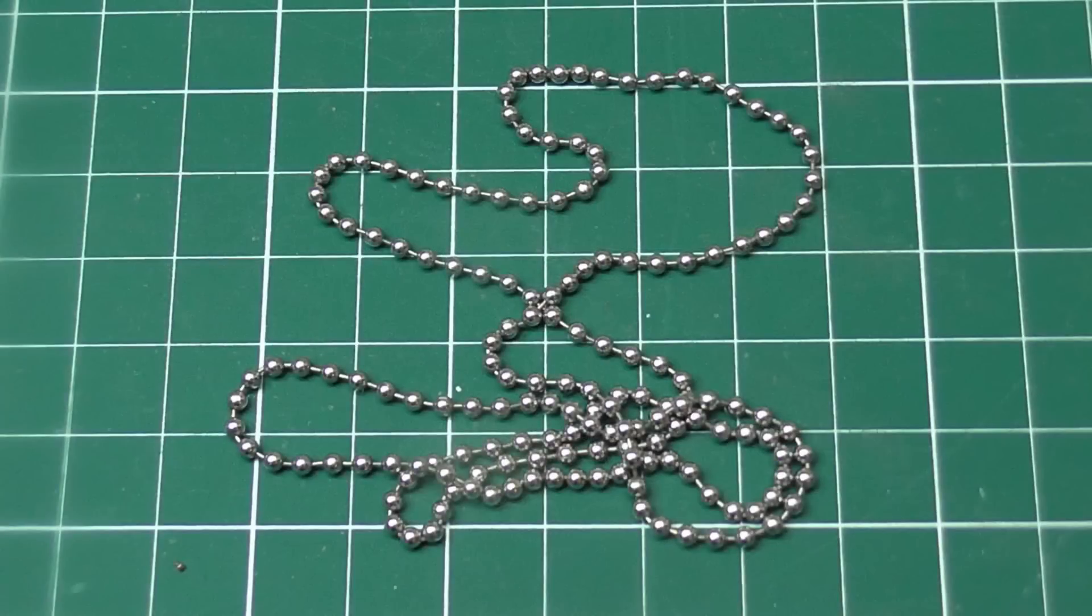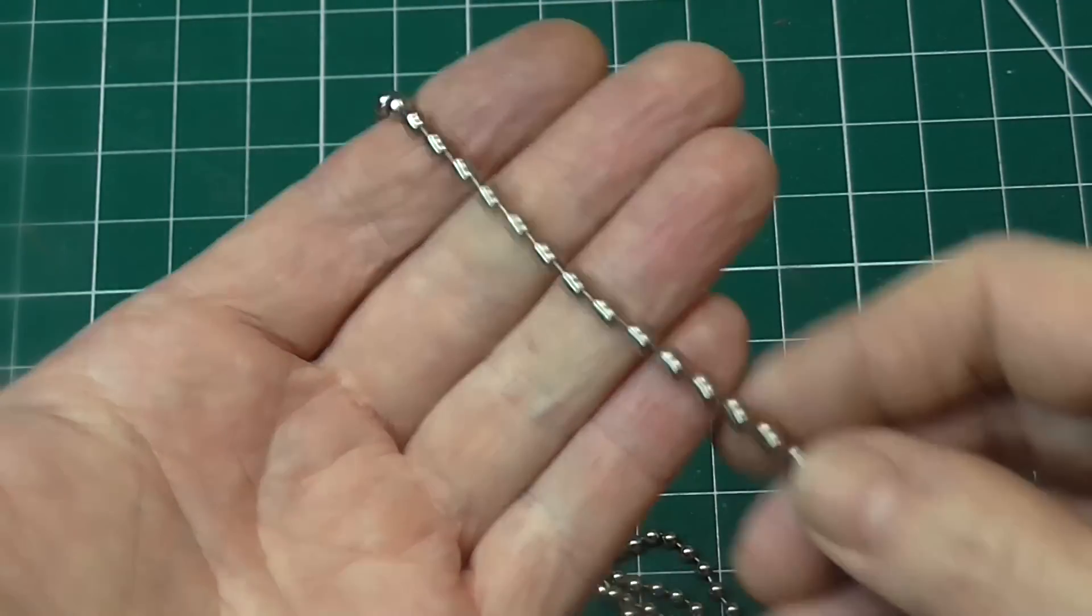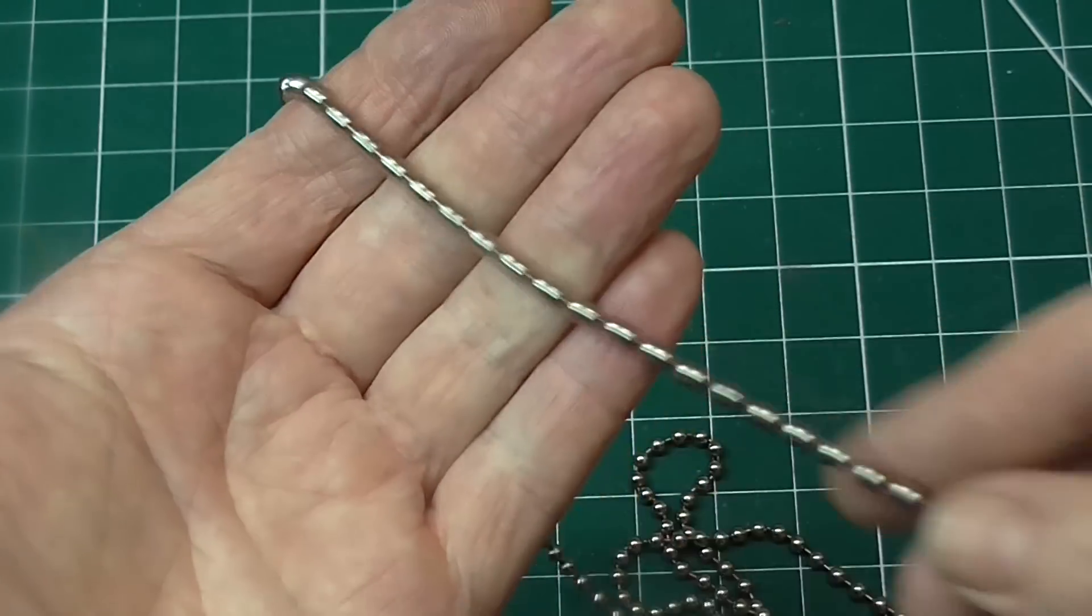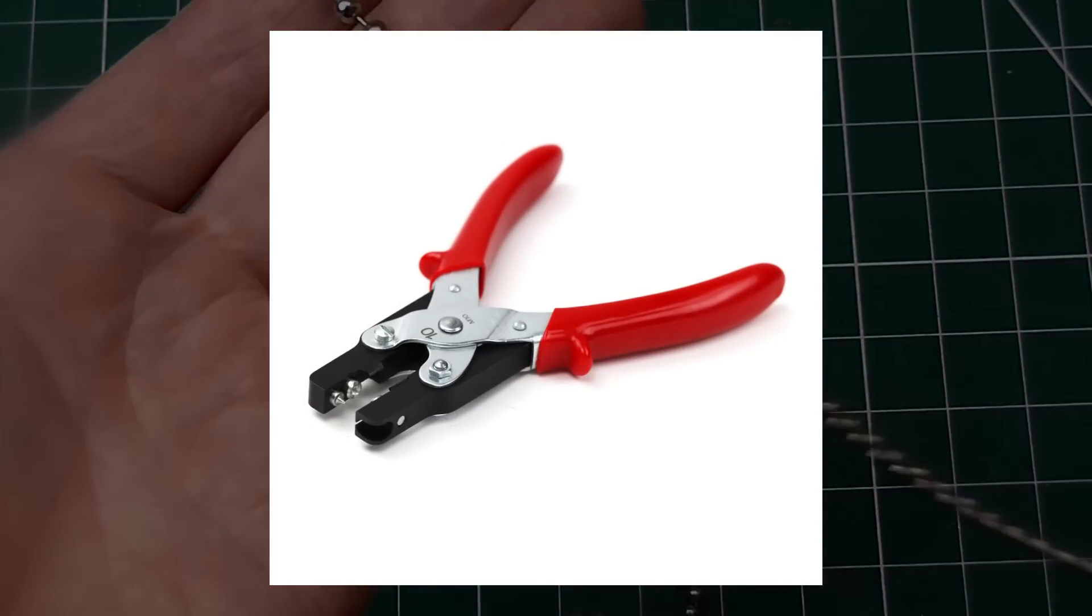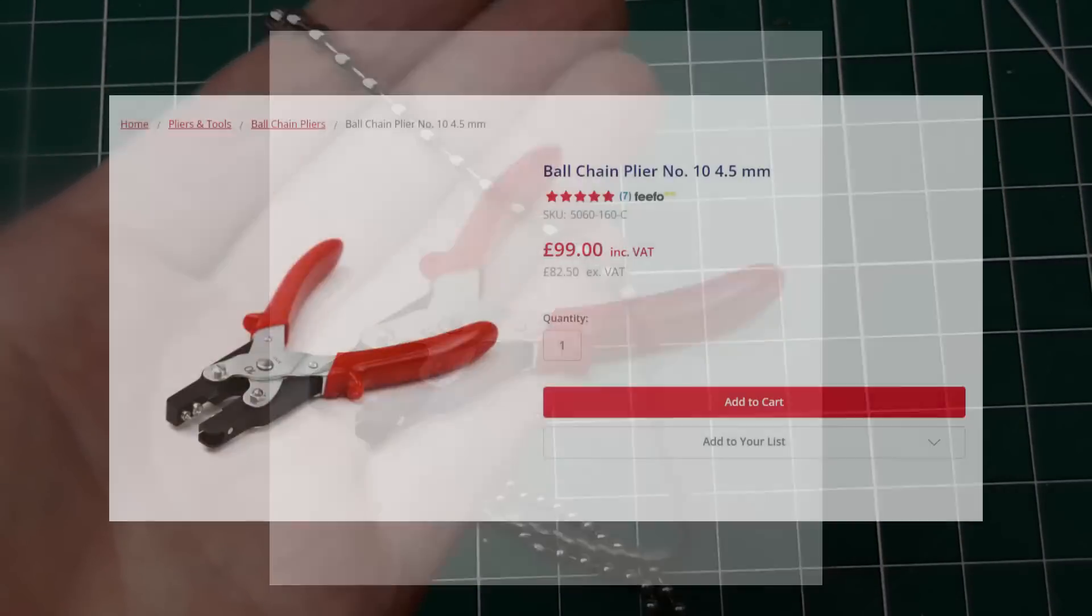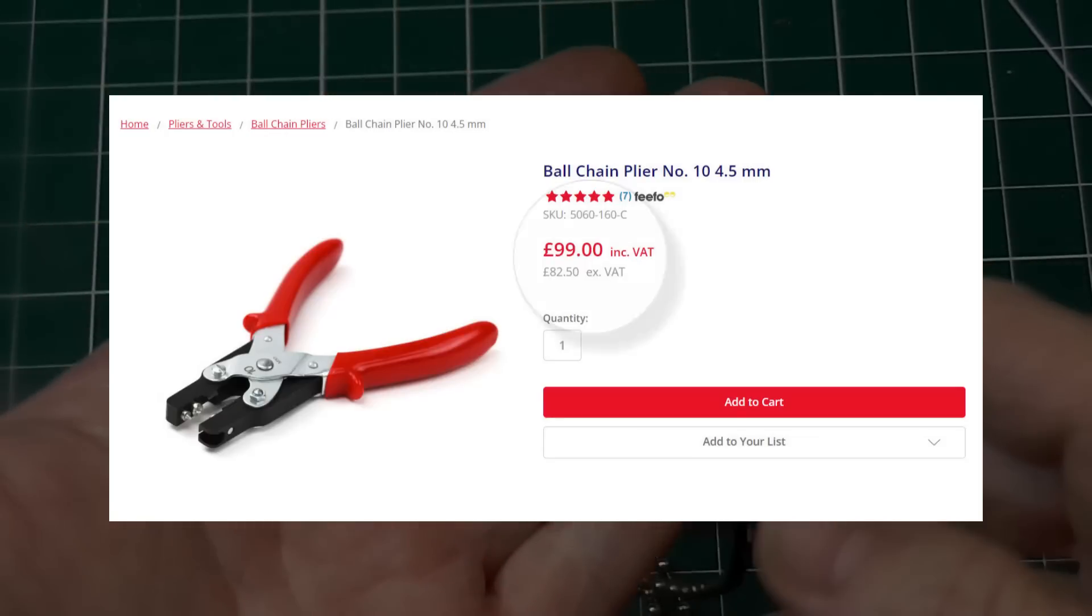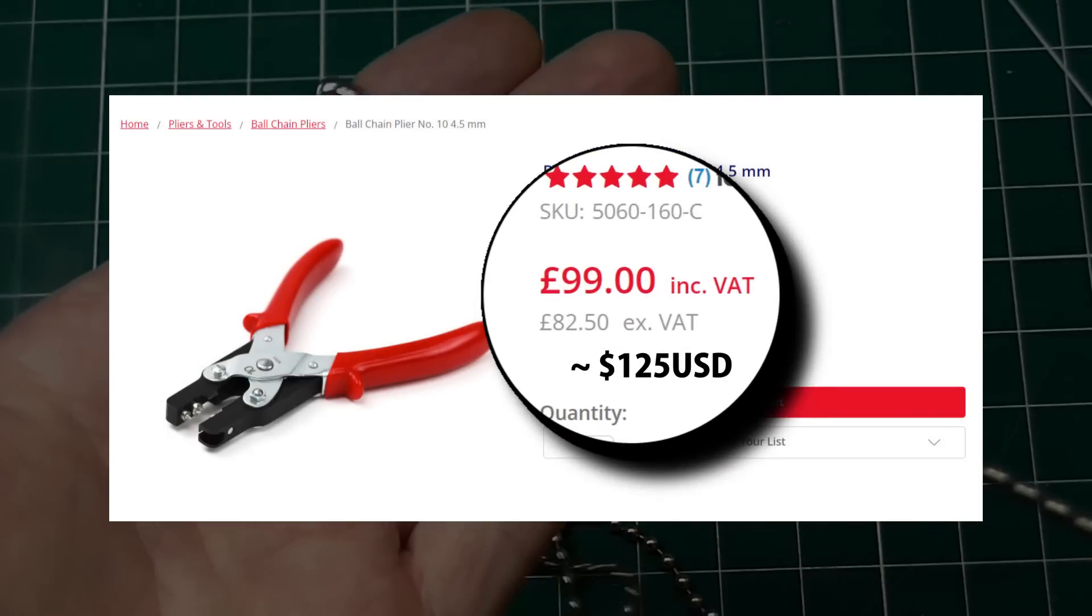I need to make what's known as an endless loop, with no connector link, only chain made into a circle. There's a special tool you can buy to do this, they are called bead chain pliers, only they're kind of expensive. Especially for a tool I'll probably only use once.